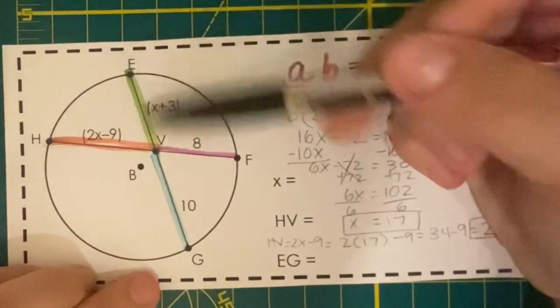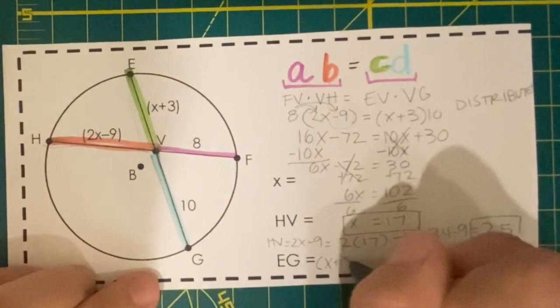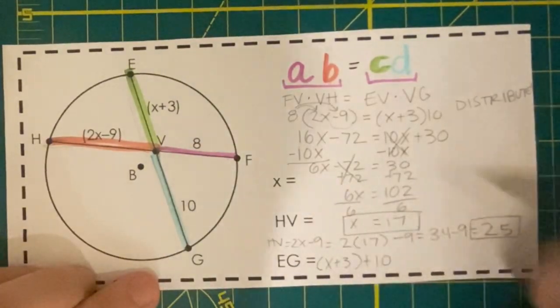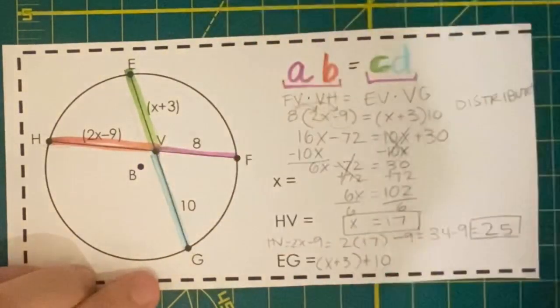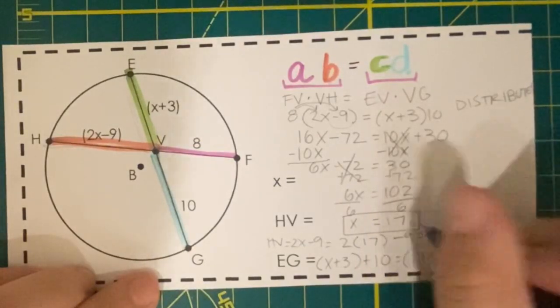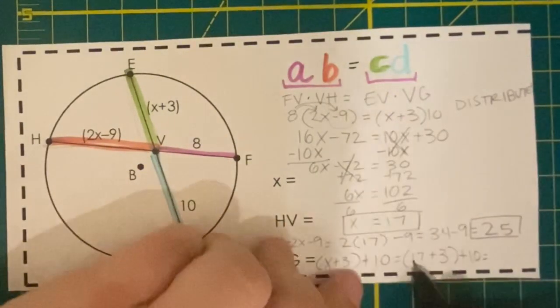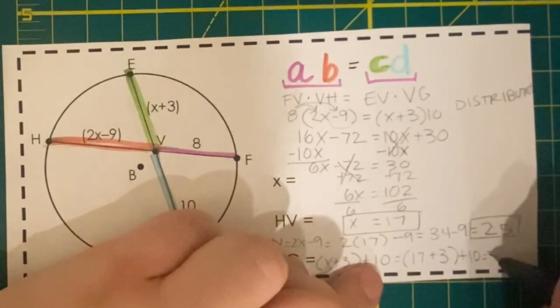Now for EG, we want the whole chord. So this will be x plus 3 plus 10, C plus D. Again, we need to substitute in our 17. 17 plus 3 is 20 plus another 10 would be 30 units long.